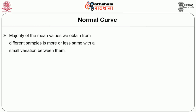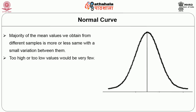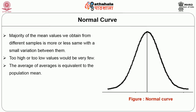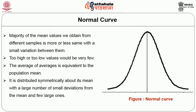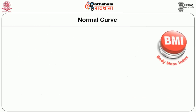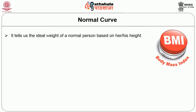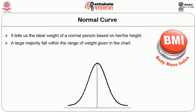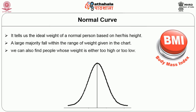The normal distribution explains the fact that a majority of the mean values obtained from different samples are more or less the same with small variation, and too-high or too-low values would be very few. That is why it is stated that the average of averages is equivalent to the population mean. Normal distribution is distributed symmetrically about its mean, with a large number of small deviations and few large ones. Normal distribution has many day-to-day applications — for example, body mass index, which tells us the ideal weight of a normal person. A large majority fall within the range given in the chart, but we can also find people whose weight is either too high or too low.